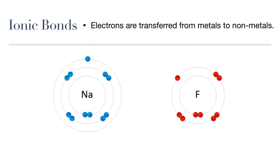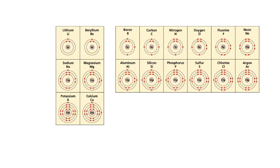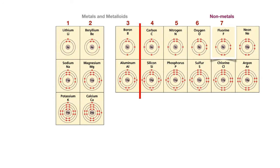Ionic bonds are formed when electrons are transferred from metals to nonmetals. But why do metal atoms lose electrons and nonmetal atoms gain them? If we look at a section of the periodic table of elements, the metals and metalloids are on the left of the dividing line and the nonmetals are on the right. Metals have one, two, or three valence electrons, while reactive nonmetals will have four, five, six, or seven valence electrons. All of them want to fill their valence shell in order to be stable. For nonmetals to completely fill their valence shell, they would need to gain the missing electrons. Fluorine, for example, has seven valence electrons, so it would need to gain one more to have a completely filled valence shell with eight.